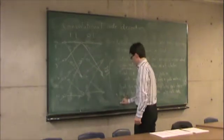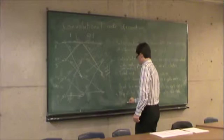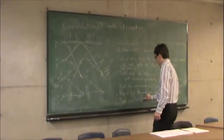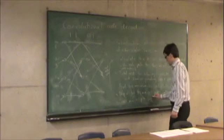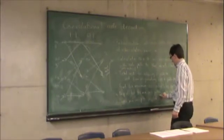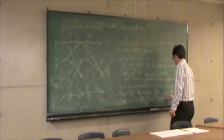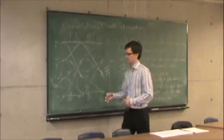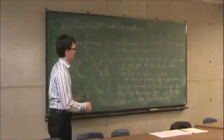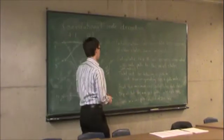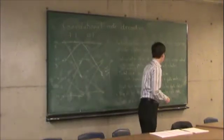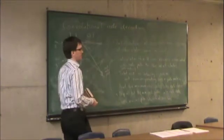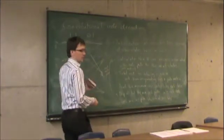And then at the end, choose the minimum cost path into the all-zero state. We zero-pad to force ourselves into the all-zero state, so our path must end in the all-zero state. So that is the Viterbi algorithm, and it's guaranteed to find you the minimum cost path through the trellis.